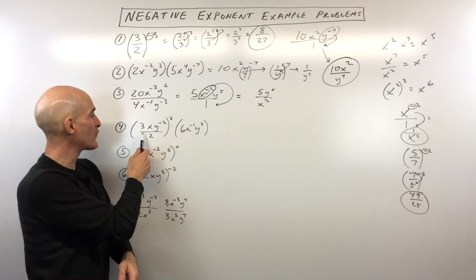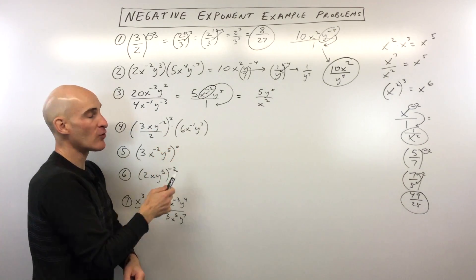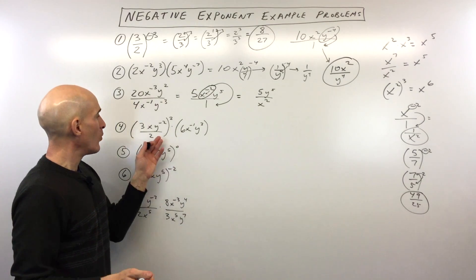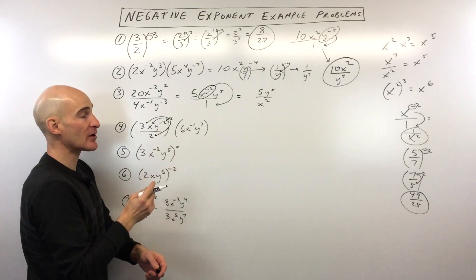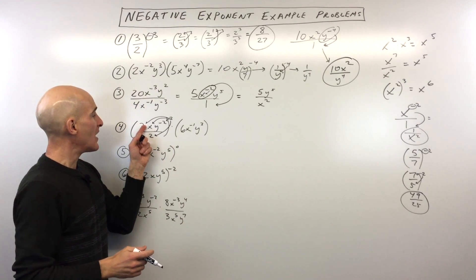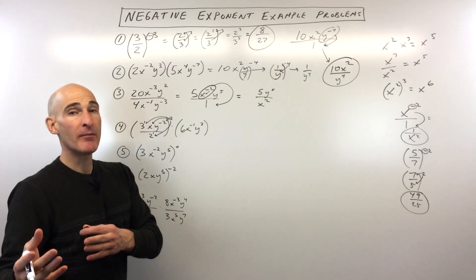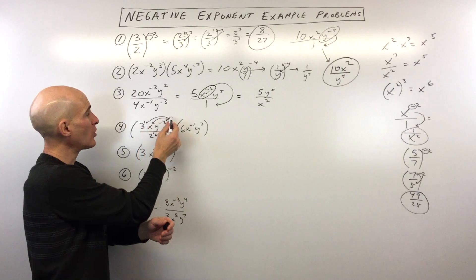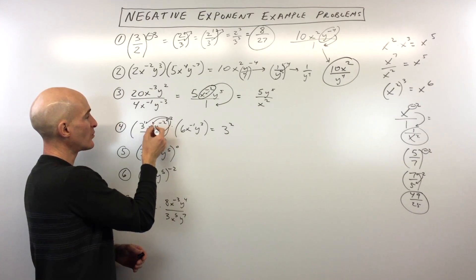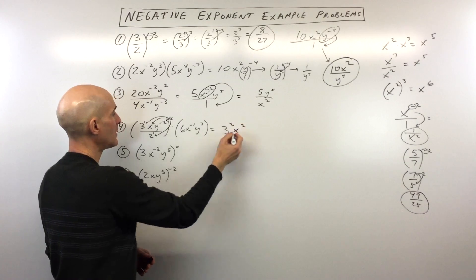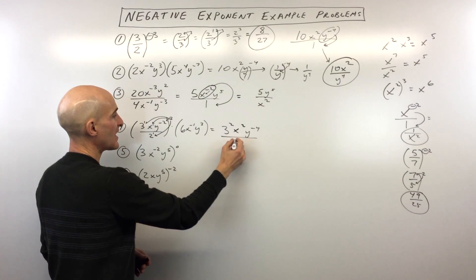We're taking it up a notch. Number 4: 3xy to the negative 2 divided by 2, the quantity squared, times 6x to the negative 1, y cubed. We're going to distribute this power to the numerator and denominator. See this 3? There's no power there, so think of it as a 1. Same thing with this 2. When you have a power raised to a power, you multiply them together. So 1 times 2 gives us 3 squared. For x, that's 1 times 2 equals 2. Negative 2 times 2 is negative 4. And the denominator: 1 times 2 gives us 2 squared.